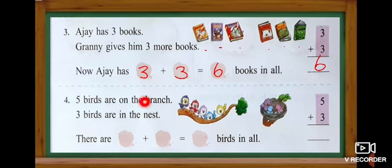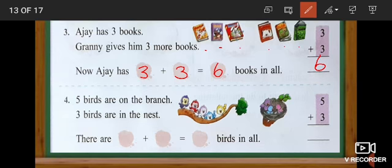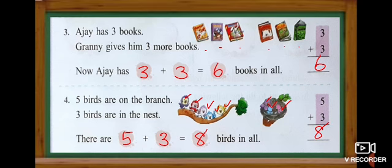Number four. Five birds are on the branch and three birds are in the nest. Five birds: one, two, three, four, five. And three birds in the nest: one, two, three. Five plus three — totally: one, two, three, four, five, six, seven, eight. Totally eight birds in all.